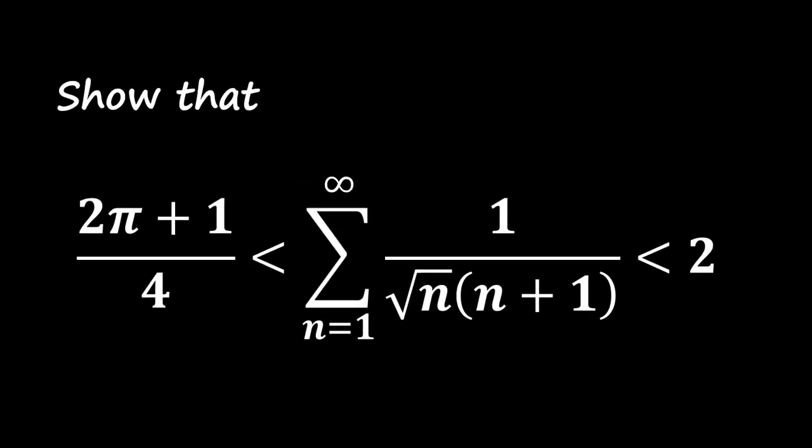In this video, we will prove an interesting inequality involving an infinite sum. Specifically, we will show that the sum of 1 over the square root of n times n plus 1, from n equals 1 to infinity, is bounded between the expression 2 pi plus 1 divided by 4 and the number 2.